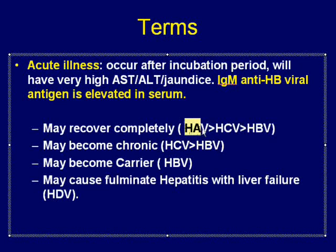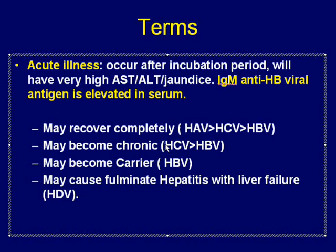Some of these infections — the acute illness — can become chronic. If the illness becomes chronic, the most likely cause is hepatitis C virus infection, which is more likely to become chronic than hepatitis B virus.